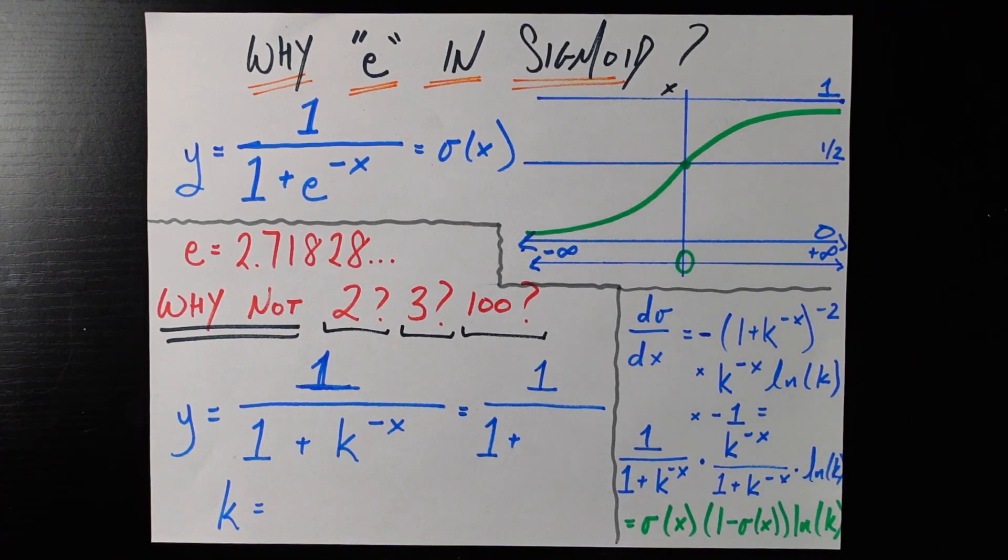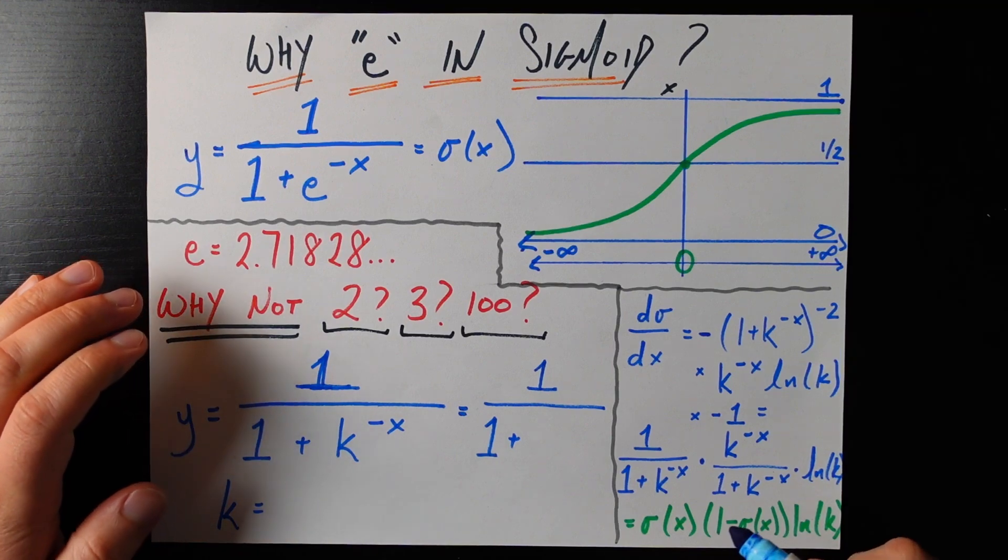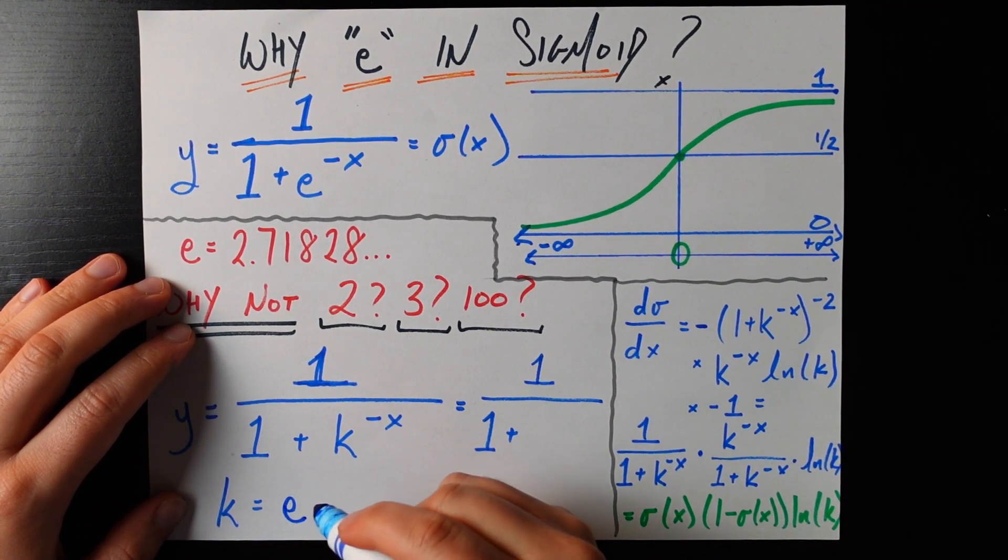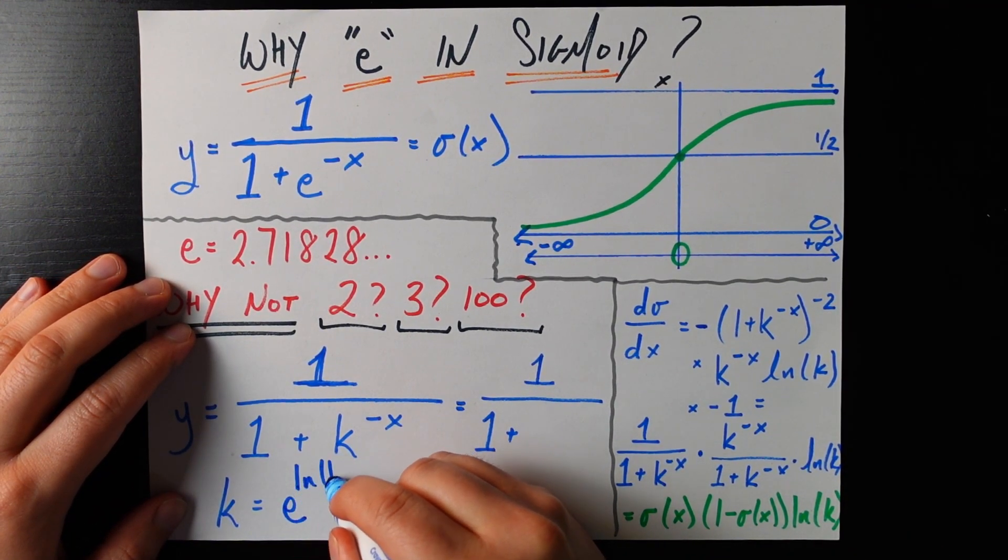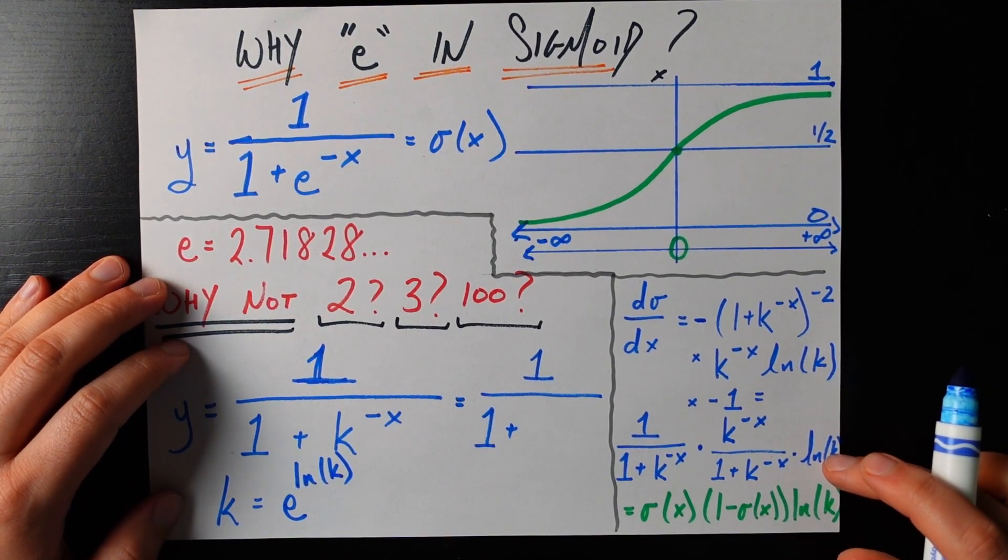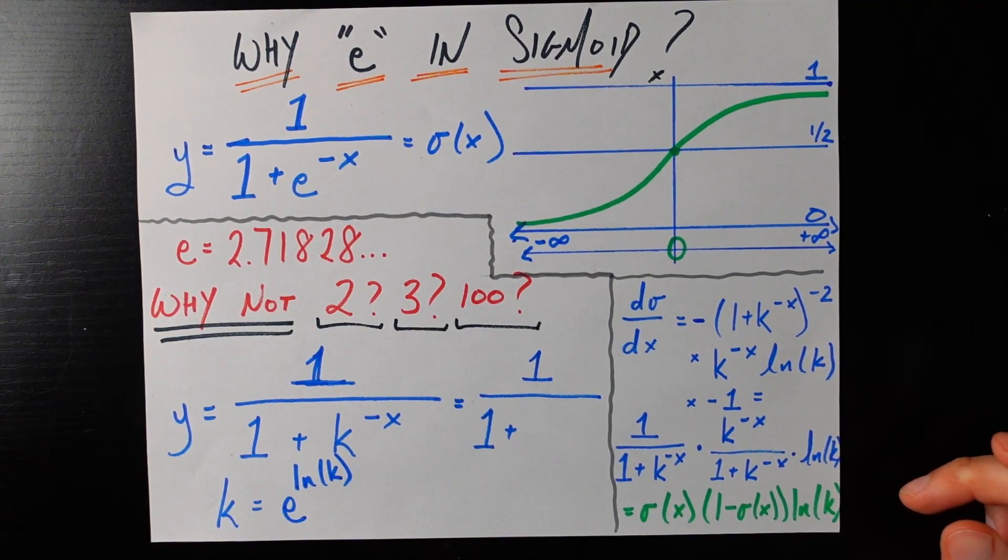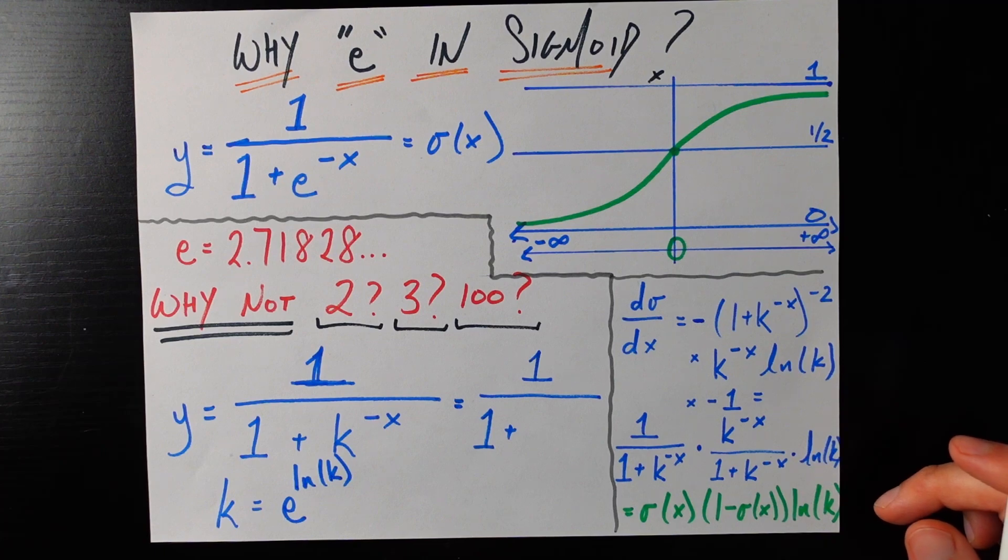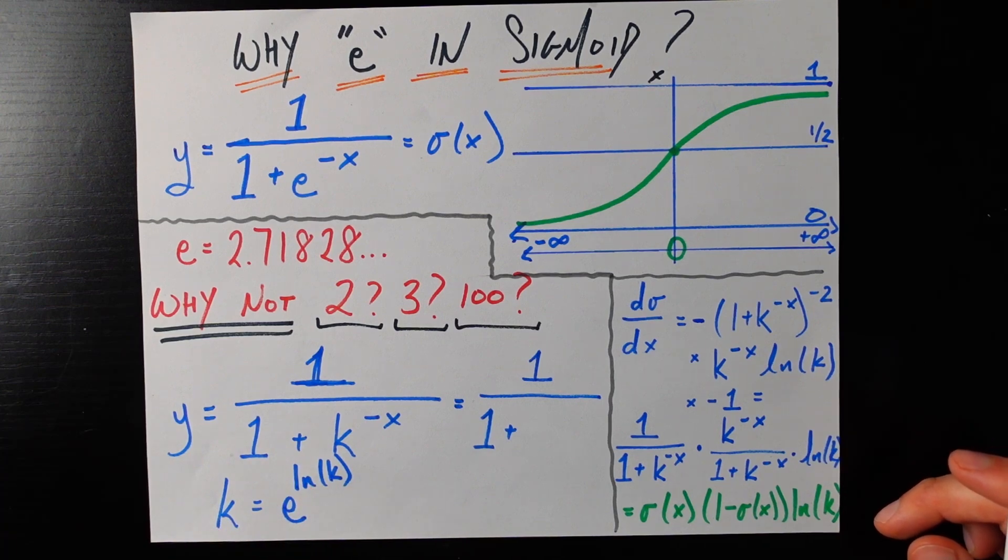Now we can write k very annoyingly as e to the power of natural log of k. Why are we allowed to do that? Because e and natural log are opposite functions and so when we do e to the power of natural log of something then the whole thing just equals the natural log's argument which in this case is k.